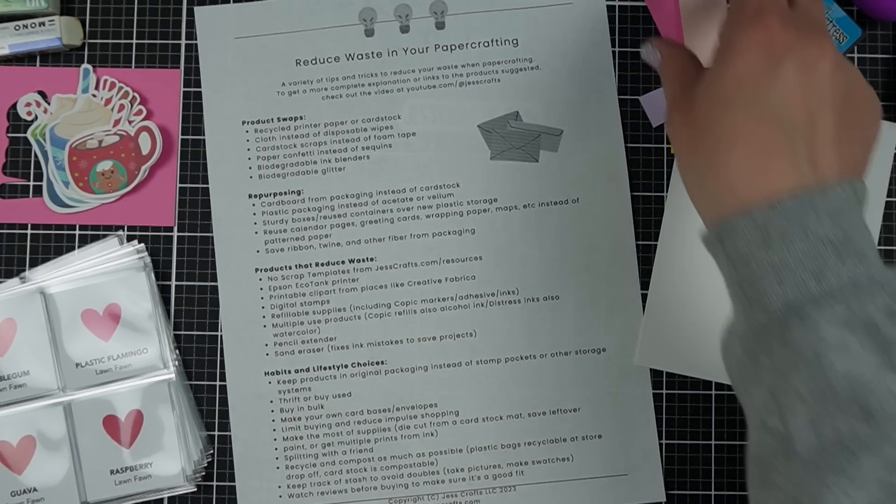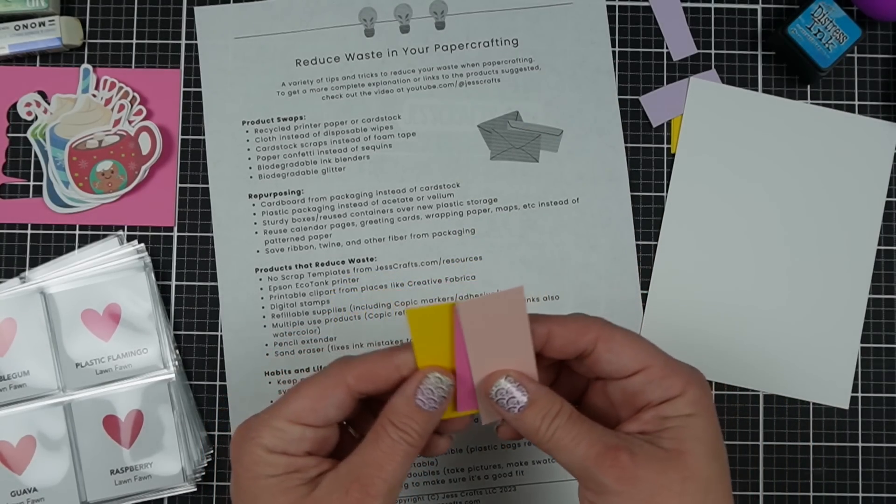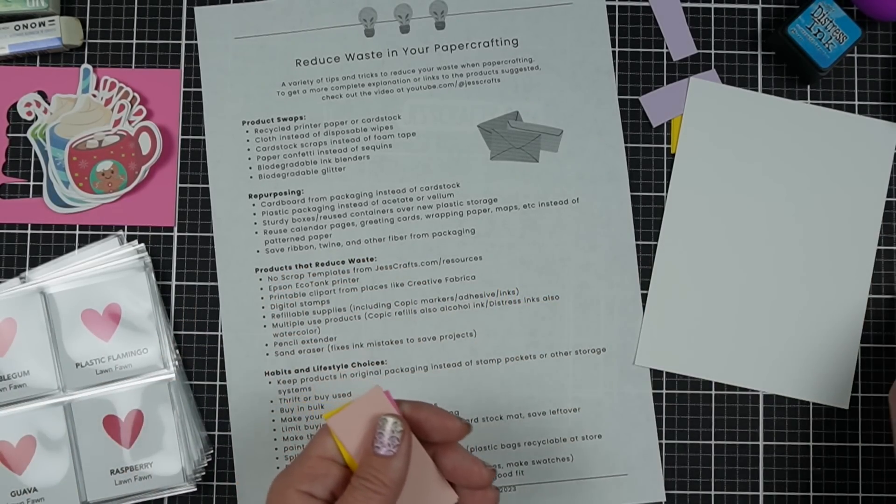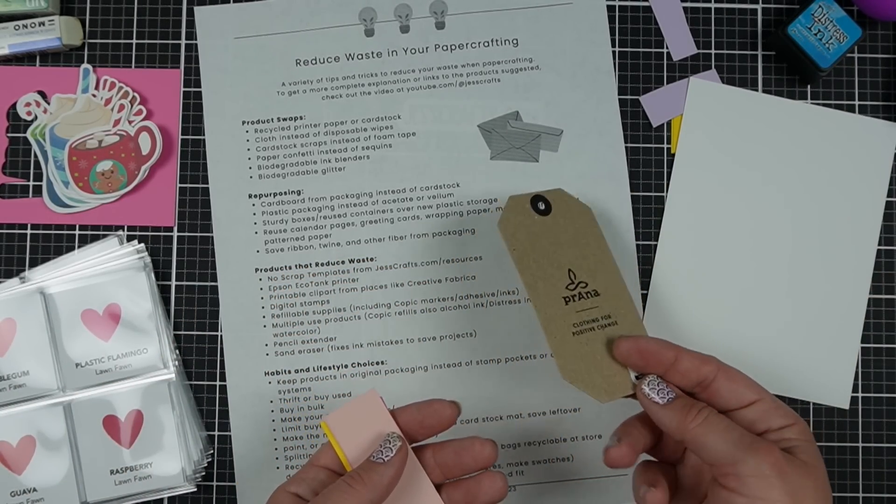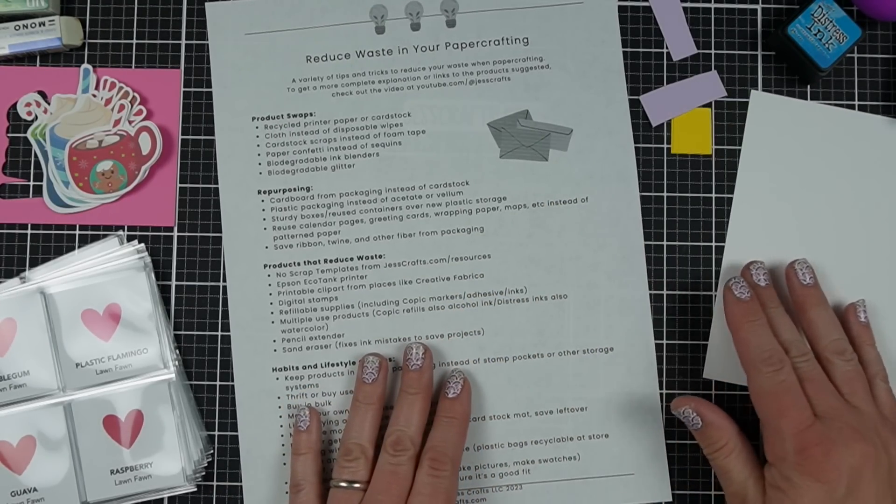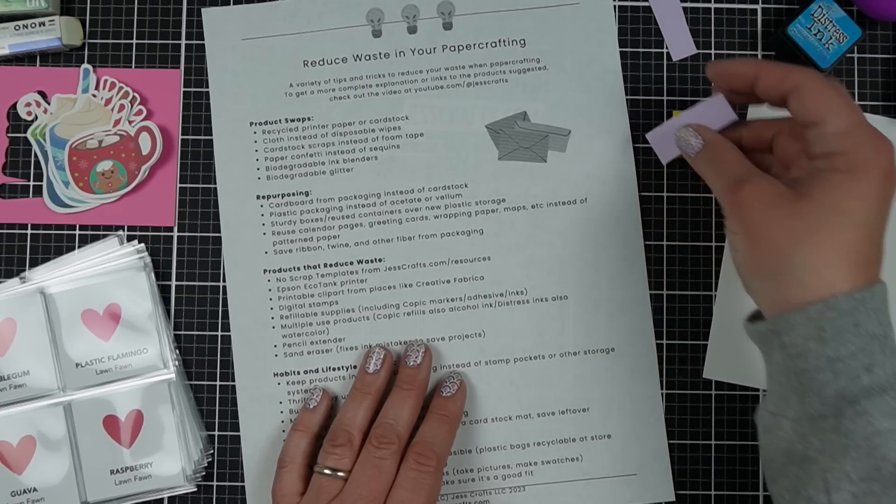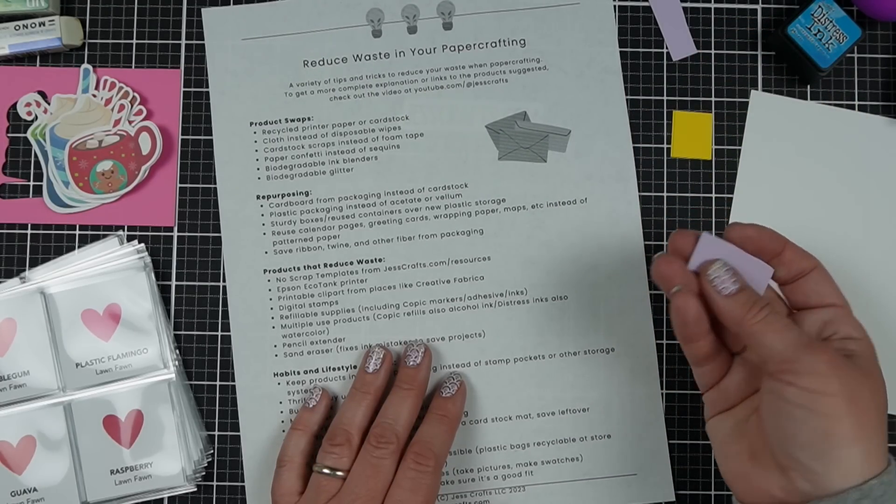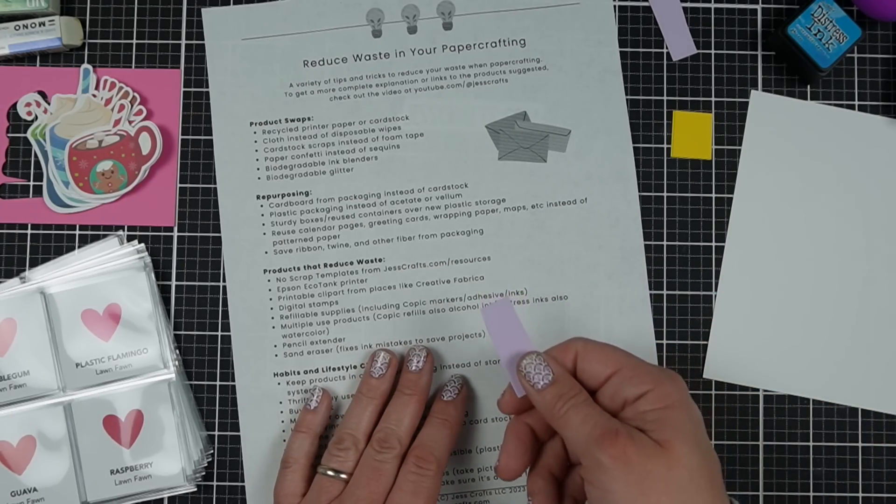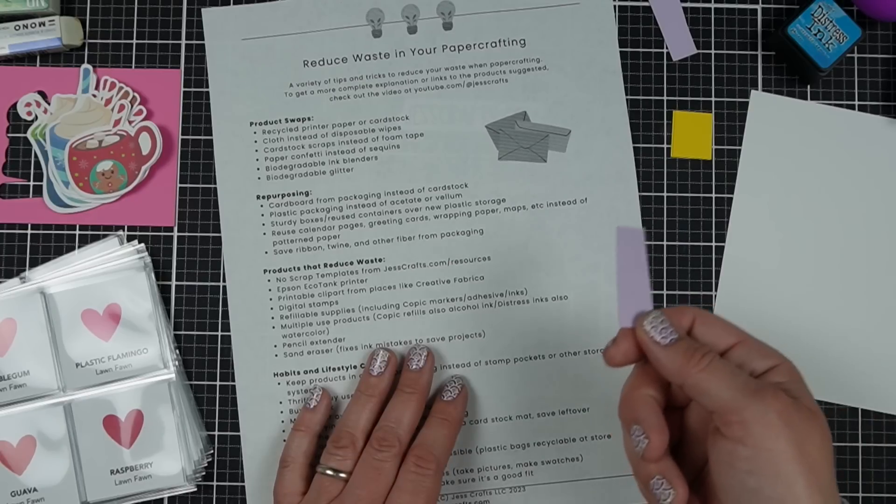Cardstock scraps instead of foam tape. So I take two pieces of thick cardstock and I glue them together and I use that to put behind elements on my card instead of foam tape. And you can do this with like packaging as well. Like I save tags, any little pieces of cardboard I get. And I just put them together because I figure while that stuff might go in the recycling, sometimes, especially if things are really small, they actually can't be recycled very well.